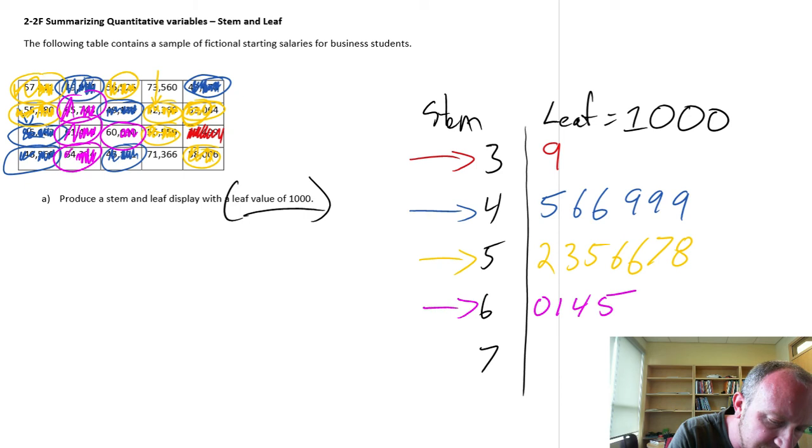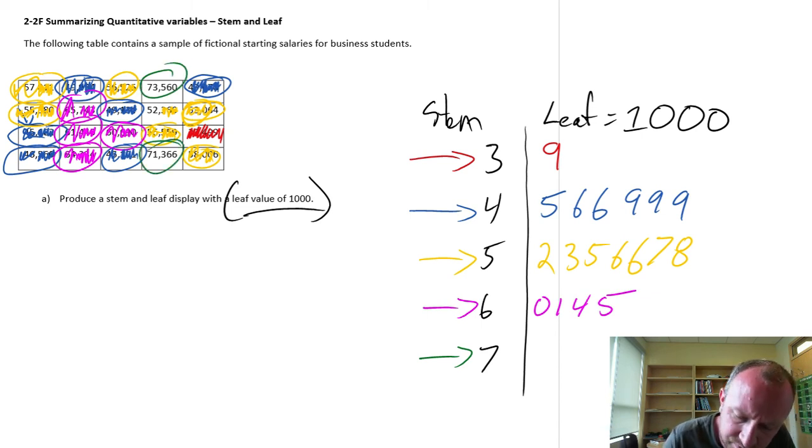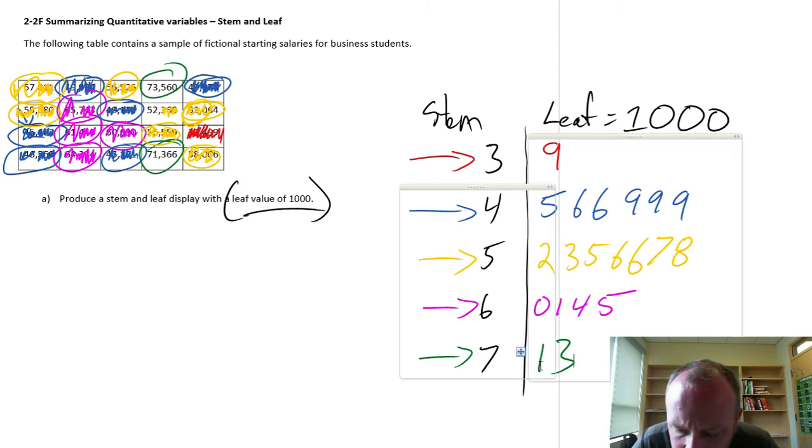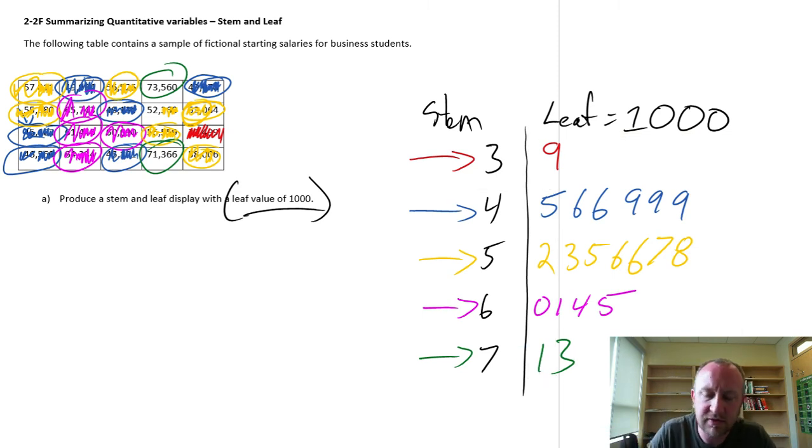And finally, our last stem is the 7. And so here, let's get rid of this. I have 73 and 71. So there's a 1, and there's a 3. Okay, so there's our stem and leaf diagram.